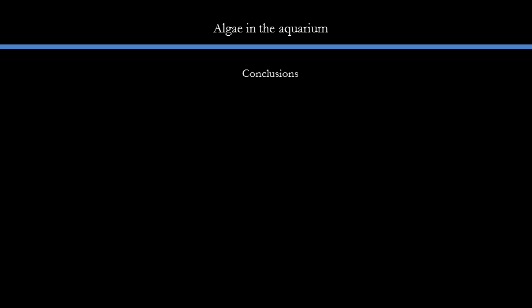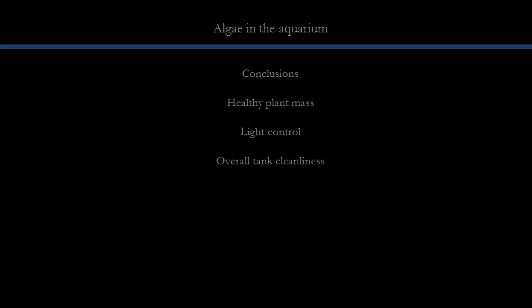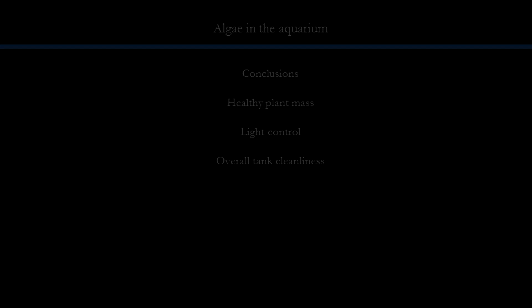With that, I conclude my video and leave you with three main takeaway points. The best defense against algae is a large, healthy, and aggressively growing plant mass in the tank. Light control is important — a little goes a long way, so do adjust your lights. And lastly, focus on tank cleanliness: water changes to remove organic waste, constant pruning to prevent overcrowding, and removal of dead leaves and dying plants — because those are algae magnets. Thank you for watching, and goodnight.